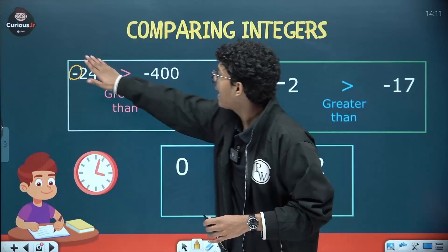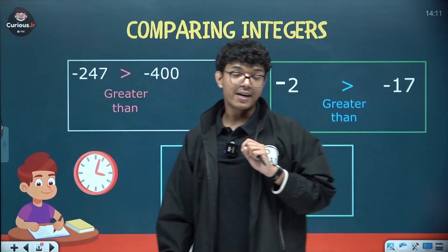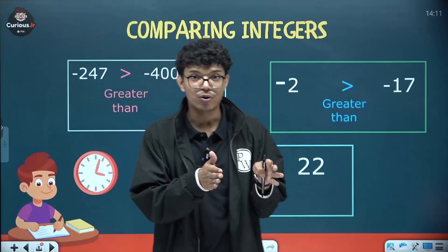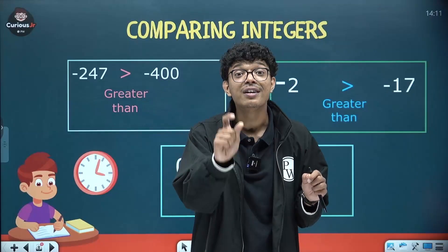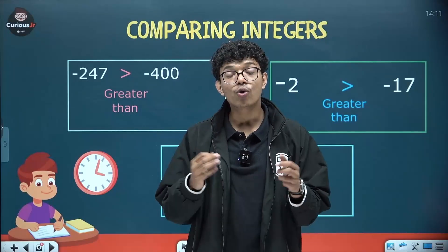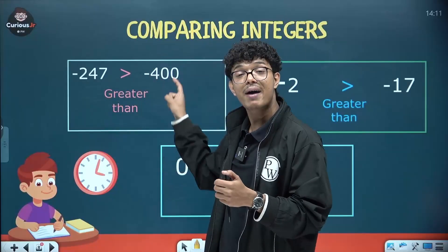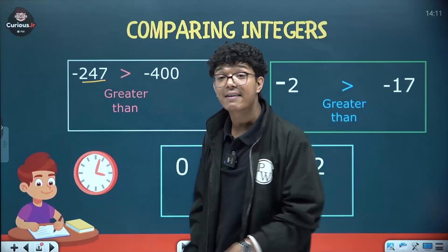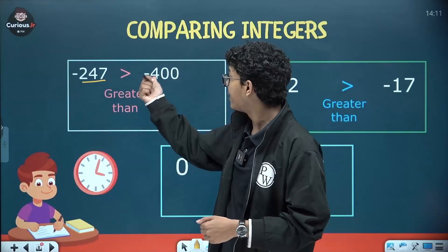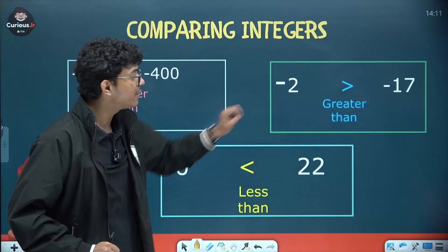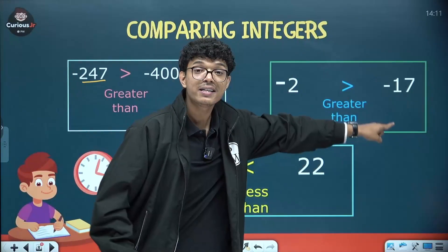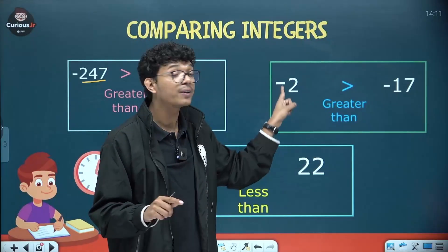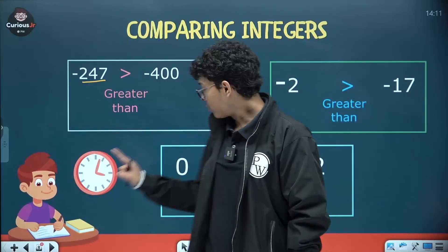So let's say that I have to compare minus 247 and minus 400. A number closer to 0 in a number line is always greater when we are comparing negative integers. So here minus 247 is greater than minus 400. Why? Kyunki minus 247 kya hai? Minus 247 is closer to 0 in a number line compared to minus 400. Similarly look at this minus 2 is greater than minus 17. This should be easy to understand kyunki in a number line minus 2 is 0 ke pass me hai.